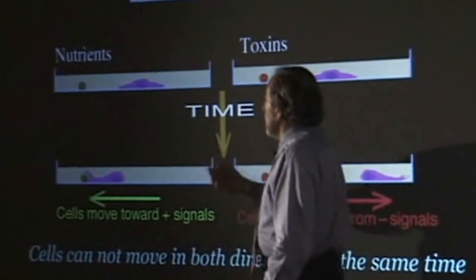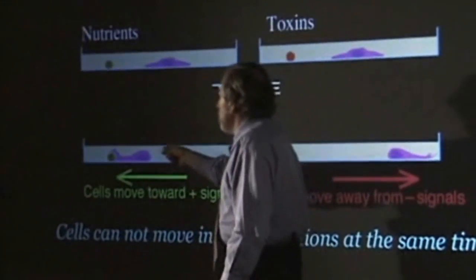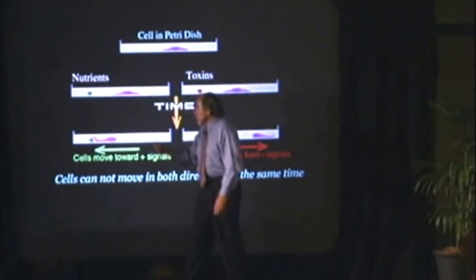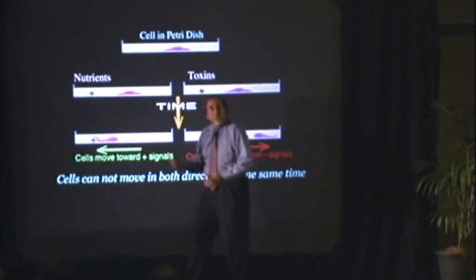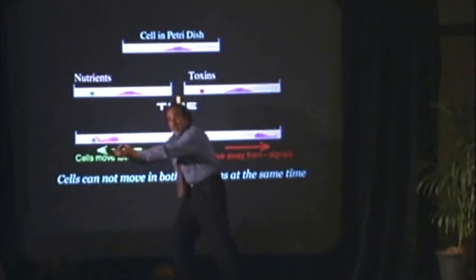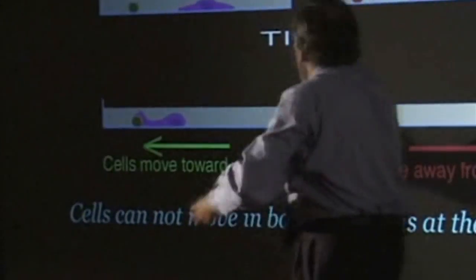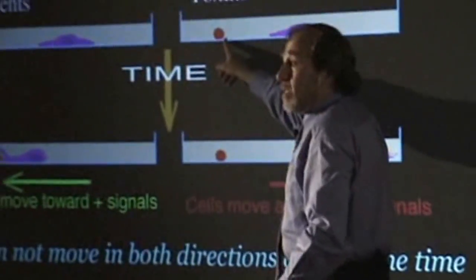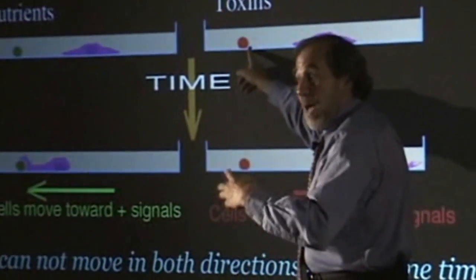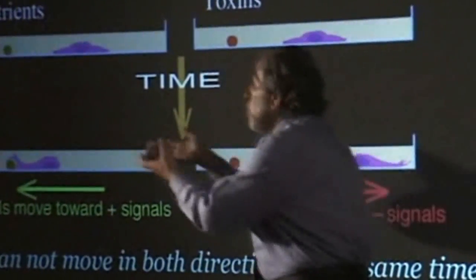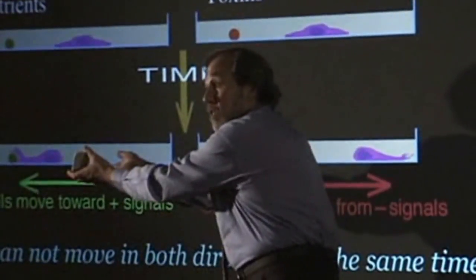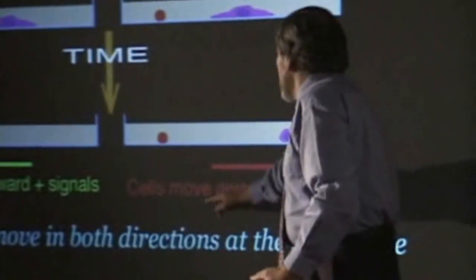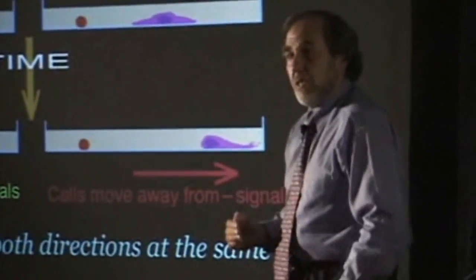The answer is this: cells always move toward positive signals — nutrients or whatever — because positive signals encourage growth. On the other hand, when a cell is confronted with a toxin, toxins threaten survival. So what does a cell do? It doesn't move to the toxin — it moves away. Therefore, cells always move away from negative signals.